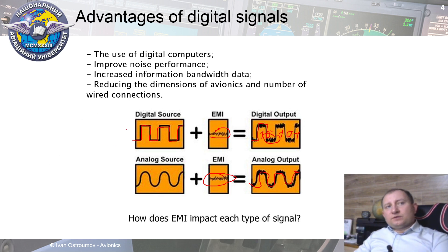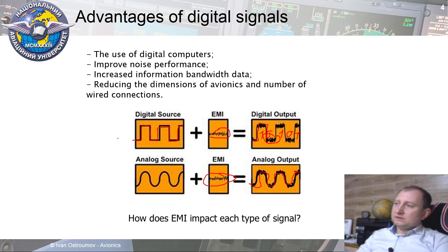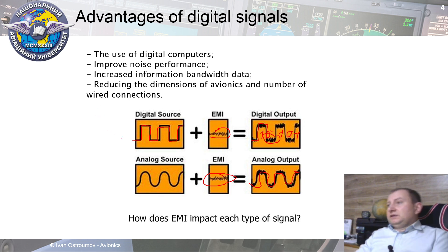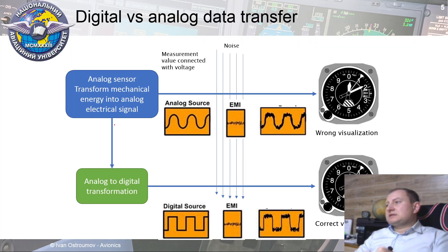Also, with digital data, on one physical layer we can transfer any sort of data. With an analog data link, one physical layer can only carry one parameter. On historical aircraft there were tons of wires because each parameter required one pair of wires. All of this costs in dimensions, size, and weight of onboard equipment. Thus digital avionics has multiple advantages compared with only one disadvantage related to real time.